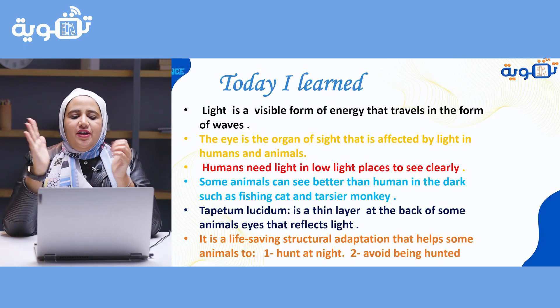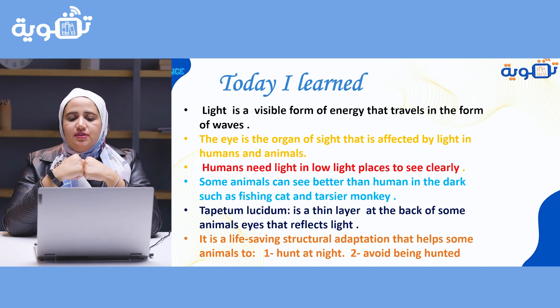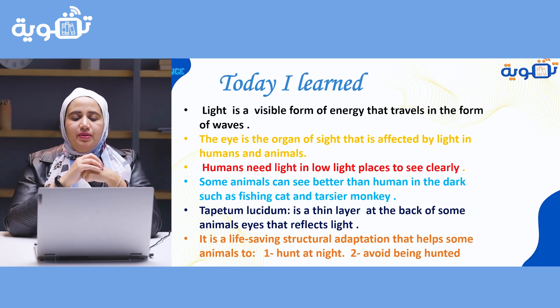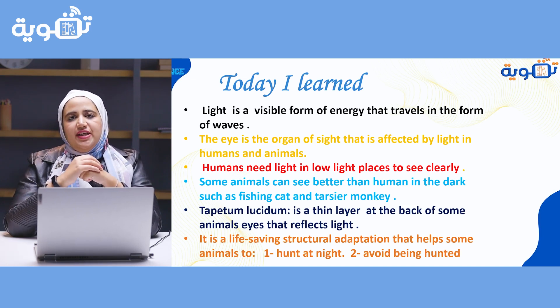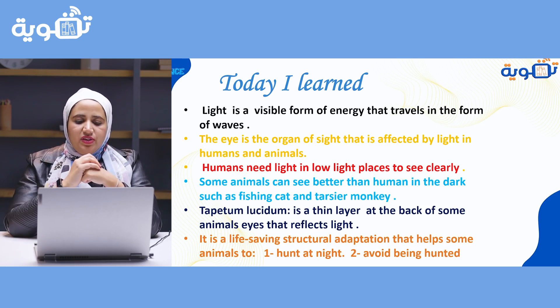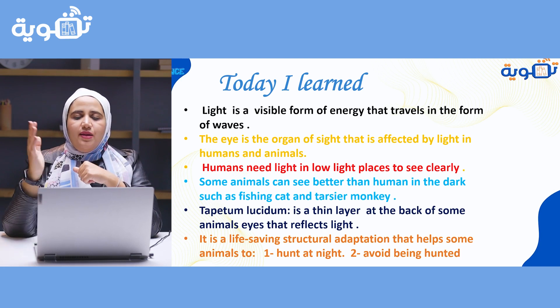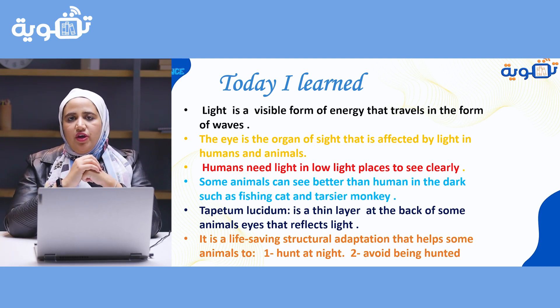Today I learned: light is a visible form of energy that travels in the form of waves. The eye is the organ of sight that is affected by light in animals and humans. Humans need light in low light places to see clearly. Some animals can see better than humans in the dark, such as the fishing cat and tarsier monkey, because they have tapetum lucidum — a thin layer at the back of their eyes that reflects light — which is a structural adaptation that helps them hunt at night and avoid becoming prey. That's all for today. Thank you for listening. See you next video, insha'Allah. Bye-bye!